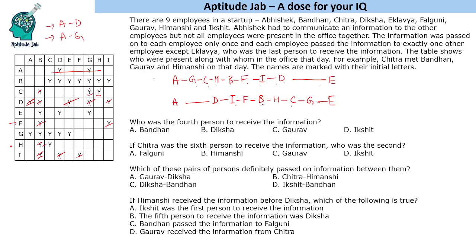Now let us look at the questions. Who was the 4th person to receive the information? In Case 1: 1st, 2nd, 3rd, 4th — it is Bandhan. In Case 2 also, Bandhan is the 4th person. So the answer is Bandhan, irrespective of the case.